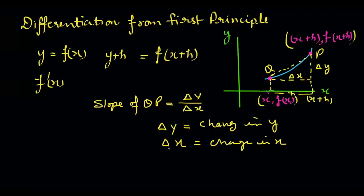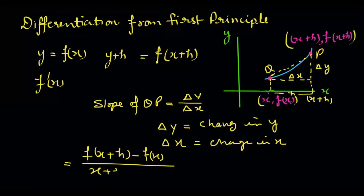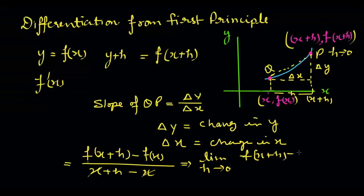From this graph we are going to put the values of delta y and delta x, so it will be f(x plus h) minus f(x) upon x plus h minus x. The x and minus x get cancelled. If point P gets closer to point Q — but not exactly at Q — we have to find a limit for that.